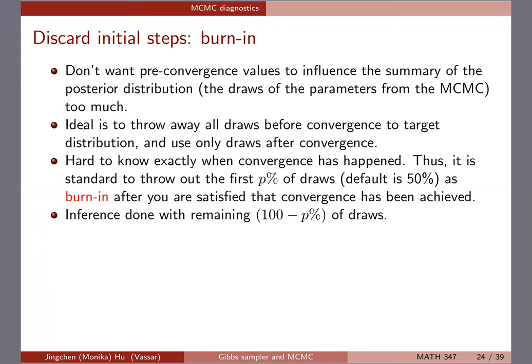Once you do the burn-in, inference should be done with the remaining draws. Because you start the chain at some values not really around the posterior, if you discard them and summarize the remaining draws, you will still have a good approximation to the actual posterior. We call this burn-in, and this term actually shows up in the JAX code.